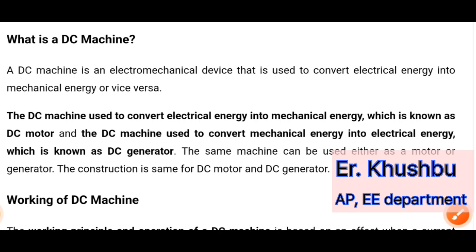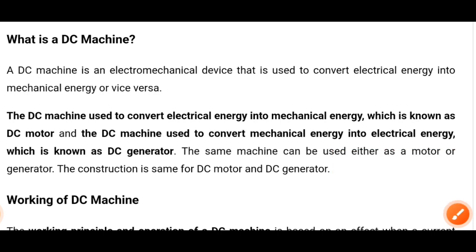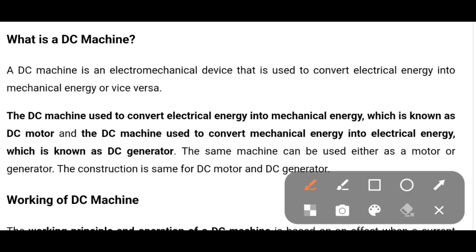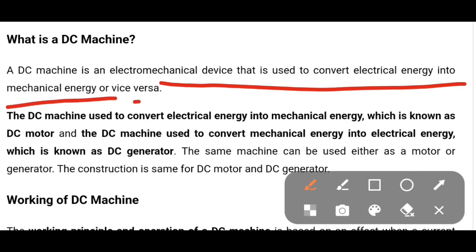What is a DC machine? A DC machine is an electromechanical device that is used to convert electrical energy into mechanical energy or vice versa. If we are converting electrical energy into mechanical energy, then it is known as a motor. And if we are converting mechanical energy into electrical energy, then it is known as a DC generator.